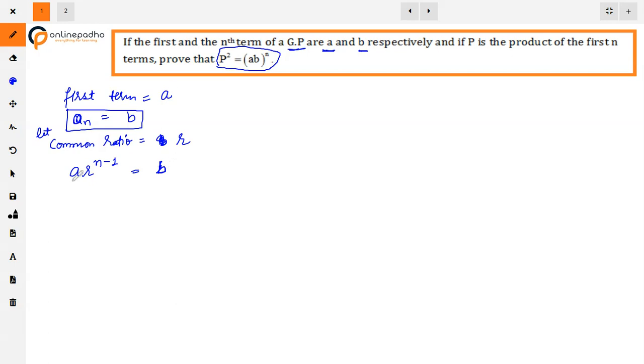A is the first term. So from here, R raised to power n minus 1 equals B upon A. And R equals B upon A raised to power 1 upon n minus 1. So we have the value of R as B by A raised to power 1 upon n minus 1.